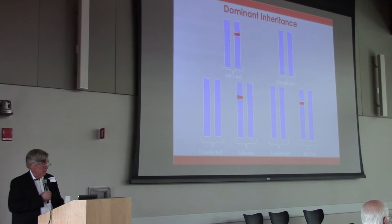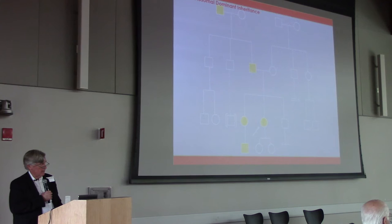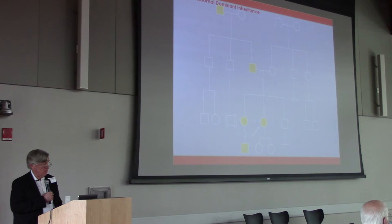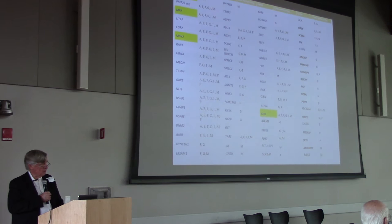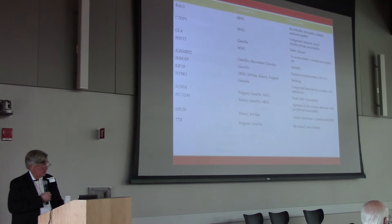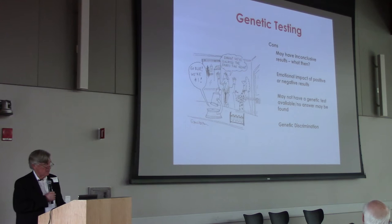This is a picture of what we mean by dominant inheritance — members of each generation are affected. It's still 50/50, not every child will be affected, and as mentioned they may be variably affected. Nonetheless, it's dominantly inherited, and we now have a whole list of genes that can be dominantly inherited and another list that are recessively inherited.